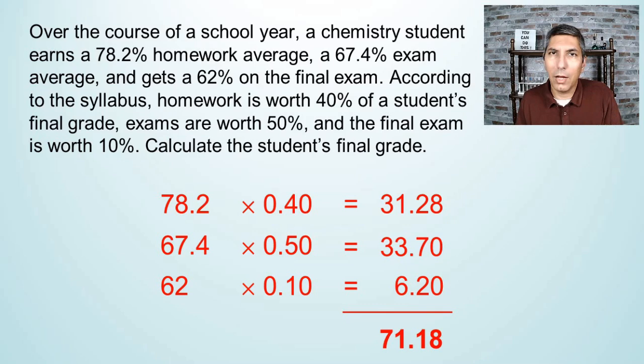You might wonder, why in the world are we talking about weighted averages in a chemistry class? Well, the fact is we calculate the average atomic mass of an element using this same method. It's a weighted average because it's impossible to take every single atom of neon, for example, and put it on a little teeny tiny scale to find out what its individual masses are and then divide the total by all the number of neon atoms in the world. We just can't do that.